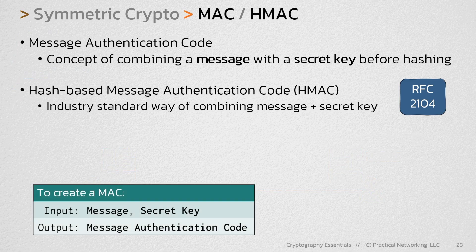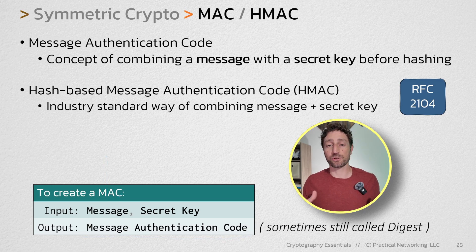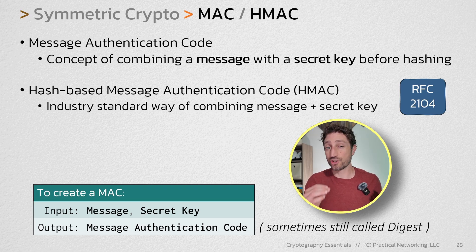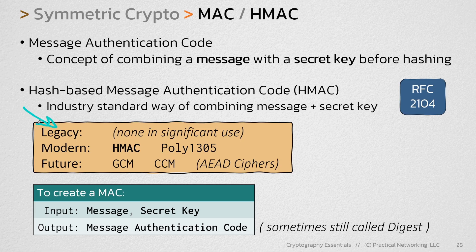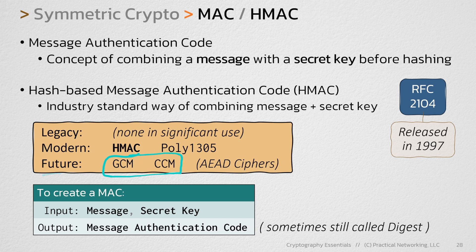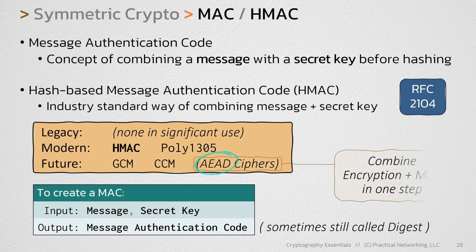The formula to calculate a MAC requires a message and a secret key, and the result is called the message authentication code for that message. The result is sometimes still called a digest, and that's fair because you are still hashing. As far as specific algorithms, the HMAC was created in 1997 and has since become the standard way of doing a MAC. Poly1305 exists in the TLS world as another way of combining a message and a secret key. You'll also see MACs done with GCM and CCM, but those aren't technically MAC algorithms — they are AEAD ciphers, which include both encryption and MAC in a single step. For pure MAC algorithms, HMAC and Poly1305 are the two you want to know about.